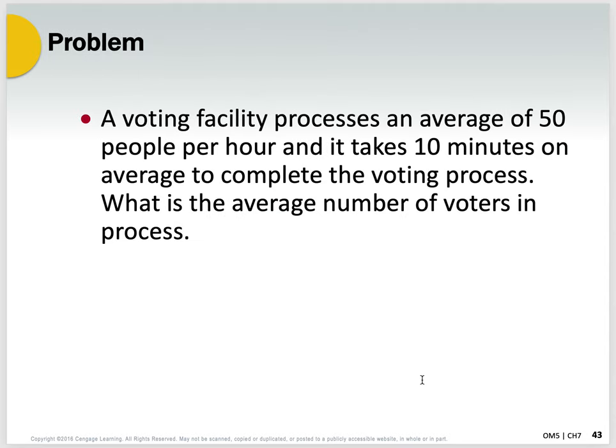Here are three problems. Problem one: a voting facility processes an average of 50 people an hour. It takes 10 minutes on average to complete the voting process. What is the average number of voters in the process at any given time — essentially, how long is the line?